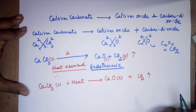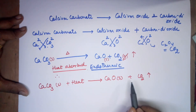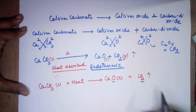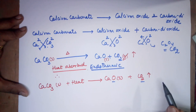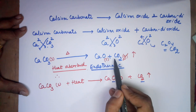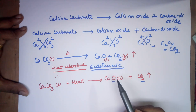Just a quick recall — when you want to balance an equation, my suggestion would be to try to balance those elements first which are more in number. For this particular equation, you should balance oxygen first. Oxygen is three in number on the reactant side — one here and two here on the product side — so it is already balanced. Calcium carbonate on heating gives calcium oxide and carbon dioxide. This reaction is an endothermic reaction.